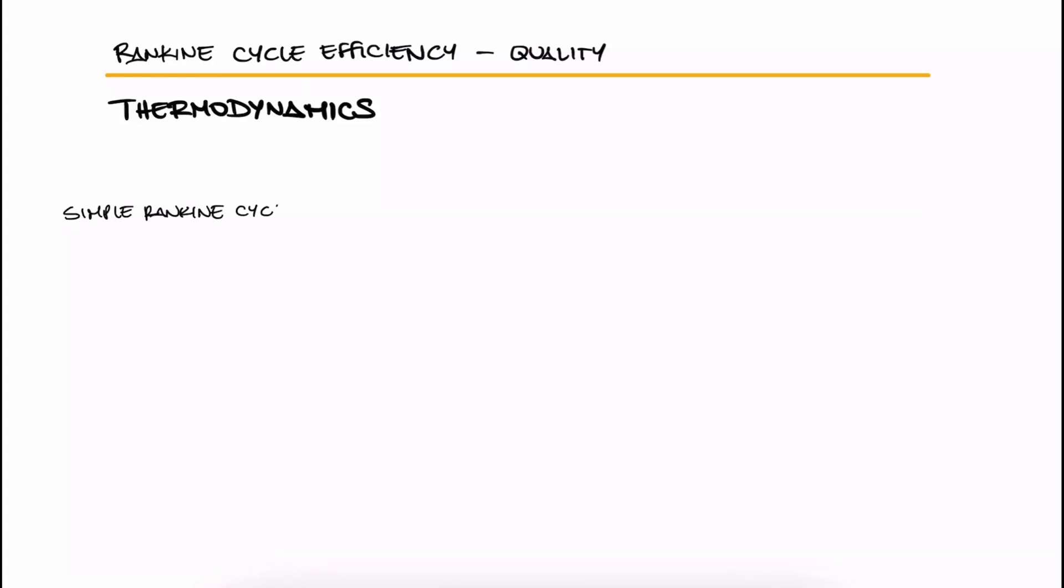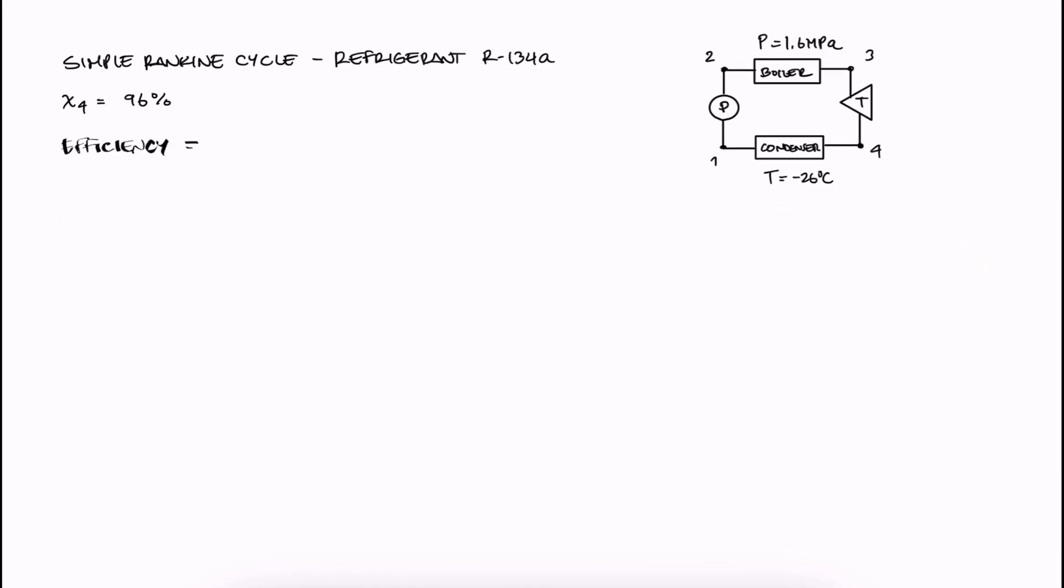A simple Rankine cycle uses refrigerant 134A as the working fluid. The condenser operates at minus 26 degrees Celsius and the boiler at 1.6 MPa. The quality of the refrigerant is 96% at the exit of the turbine. What is the efficiency and the back work ratio of this cycle?